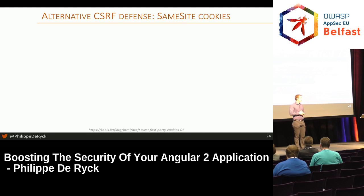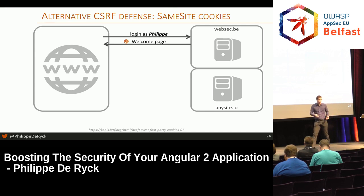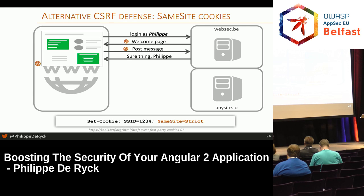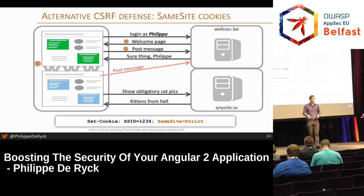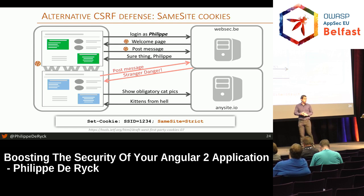There's a second potential defense called same-site cookies. This is a new cookie attribute — it's been there for maybe half a year to a year. Essentially, you set a cookie like before, but you add the same-site flag. Same-site tells the browser: this cookie is supposed to be used from my site only and not when you come from somewhere else. So if a request is made from an attacker's site, the cookie will not be attached by the browser. The browser thinks: you're coming from anysite.io going to website.be — that's not the same site, so I'm not going to attach this cookie for you.